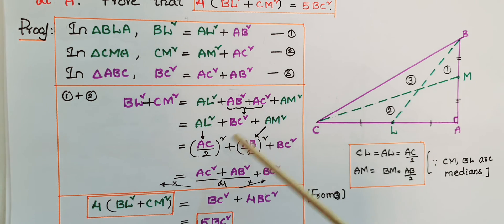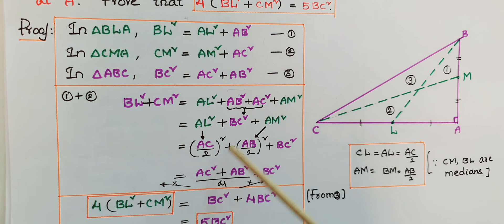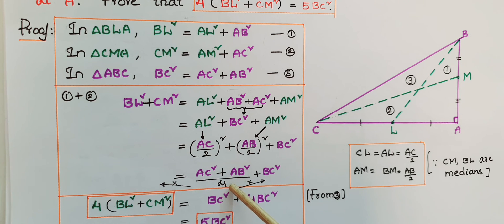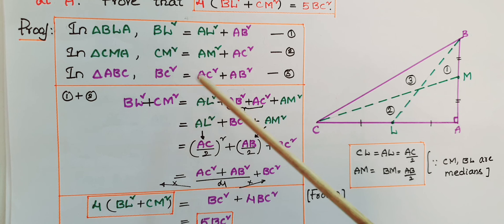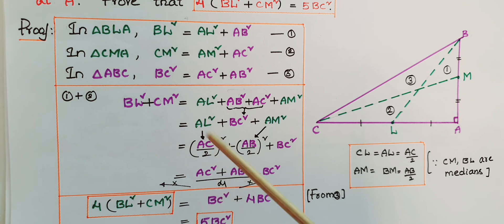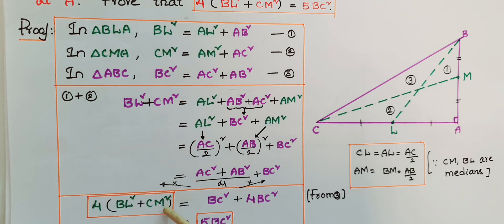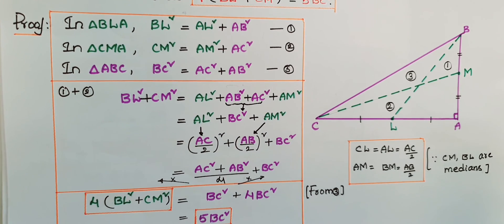So this equals AC²/4 + AB²/4 + BC², which is (AC² + AB²)/4 + BC². Since AC² + AB² = BC², we can write BC²/4 + BC². Multiplying the whole equation by 4 gives 4(BL² + CM²) = BC² + 4BC² = 5BC². Hence proved.